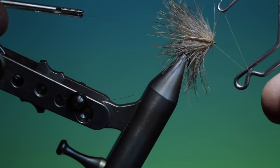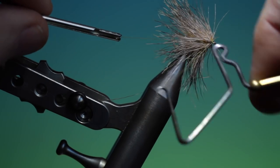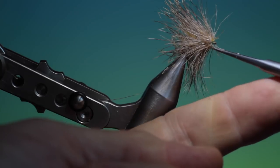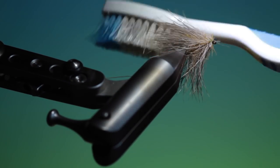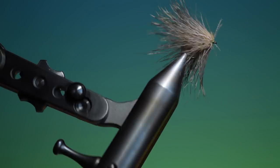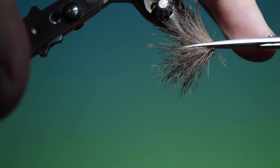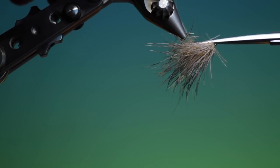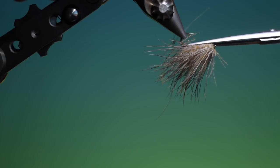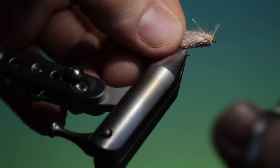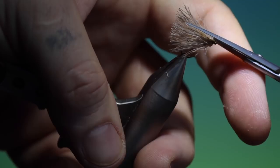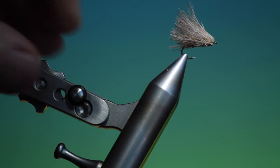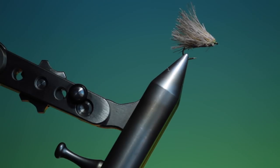A whip finish tool, give it a whip finish, remove the tying thread. Another brush just to open all the fibers out again, and we want our scissors. We make a cut underneath, straight across the bottom, and you can if you wish trim off at the back. There we are, there's the deer and CDC caddis, very quick fly to tie.